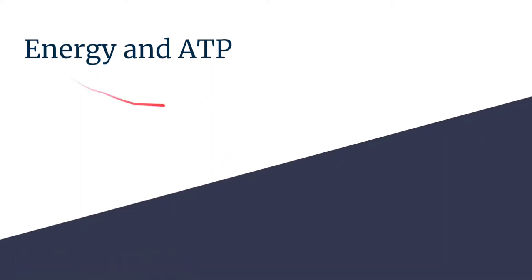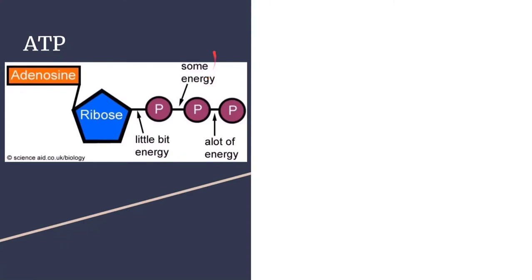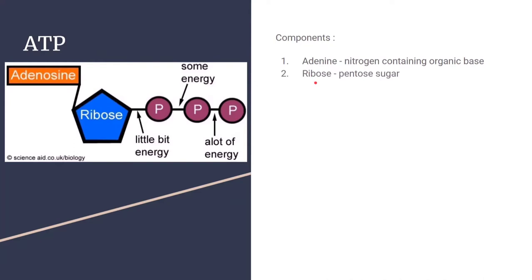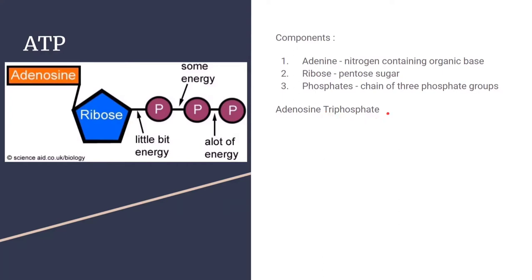Today's video is on energy and ATP. ATP is a molecule made from adenine, which is a nitrogen-containing organic base also found in DNA. It is made of ribose, a pentose sugar containing five carbons. It also has phosphates — a chain of three phosphate groups is attached to the ribose sugar, as you can see here: one, two, and three. This makes ATP adenosine triphosphate, named because it has an adenine and three phosphate groups.